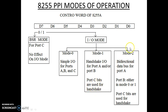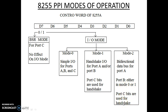In Mode 2, the 8255 acts as a bidirectional data bus for Port A. Port B is never used in bidirectional mode; the value of Port B could be Mode 0 or Mode 1. Port C bits are used for handshake signals.